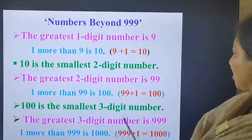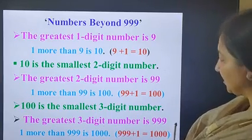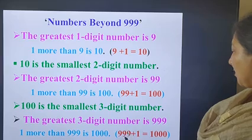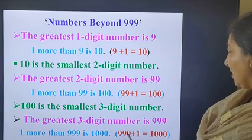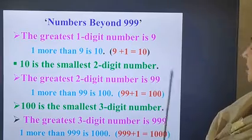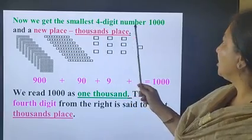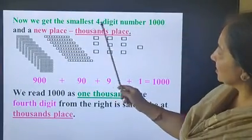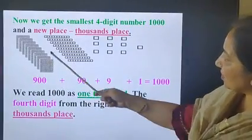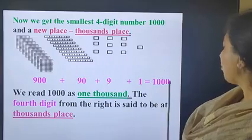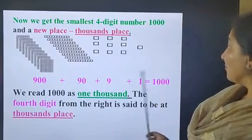The greatest 3-digit number is 999. 1 more than 999 is 1000. When we add 1 to 999, we get number 1,000. Now we get the smallest 4-digit number: 1000, and a new place, 1000's place. Just look at this picture. 900 plus 90 plus 9 plus 1 makes 1000. And we get the new place, 1000's place.